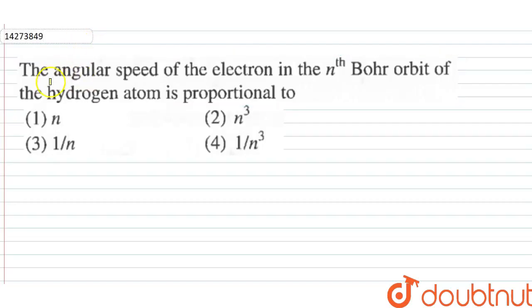This question asks: the angular speed of the electron in the nth Bohr orbit of the hydrogen atom is proportional to what? We know that according to Bohr postulates,